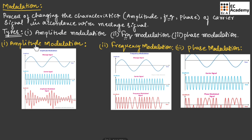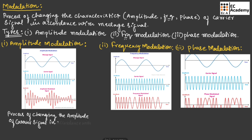Now let us understand what amplitude modulation is. We can define amplitude modulation as a process of changing the amplitude of the carrier signal in accordance with the message signal.